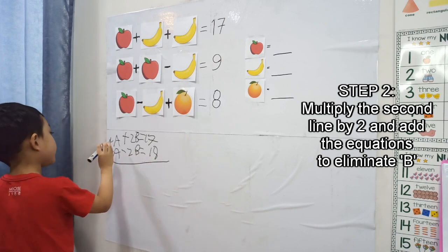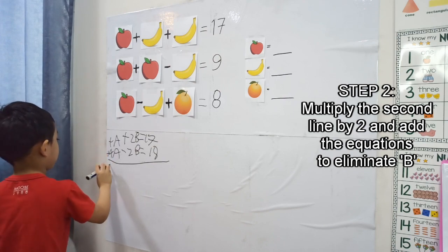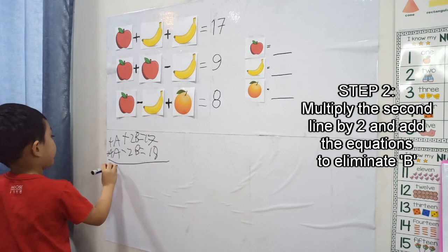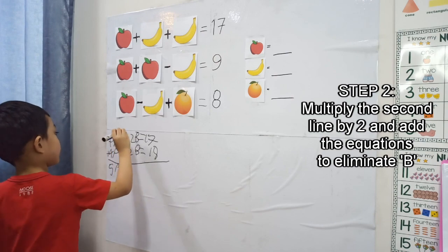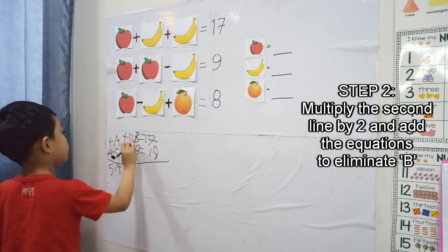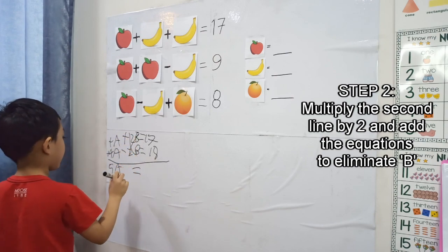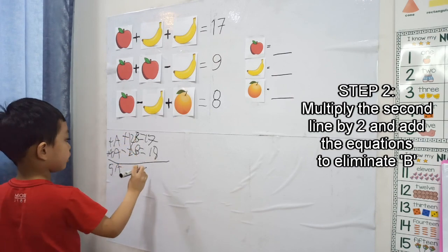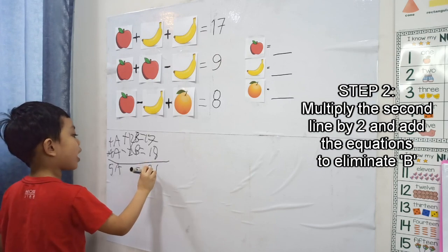A plus A plus A equals 5A. 5A equals 35.